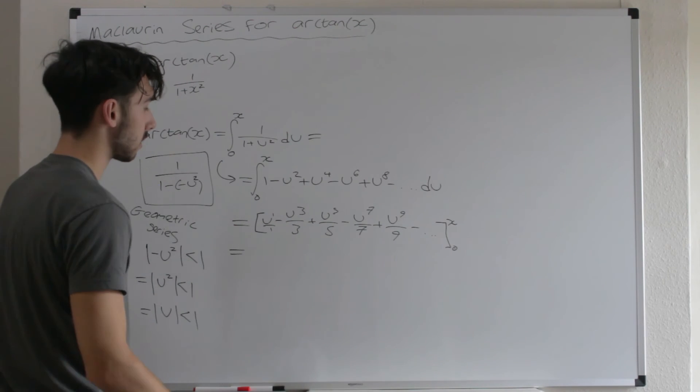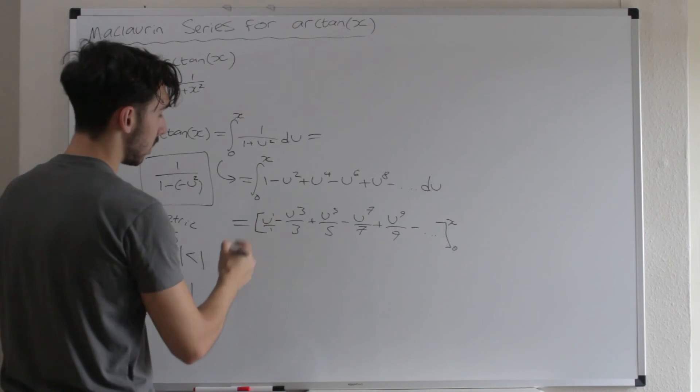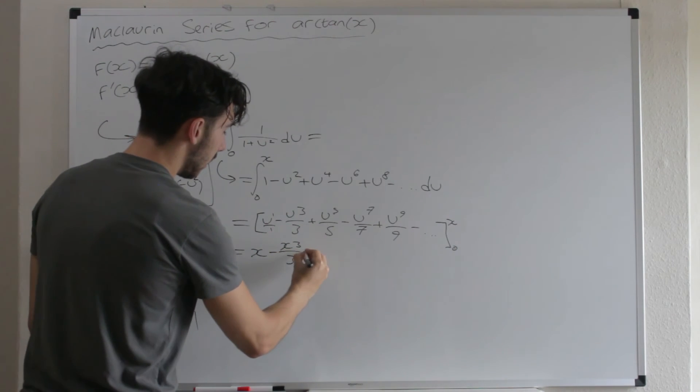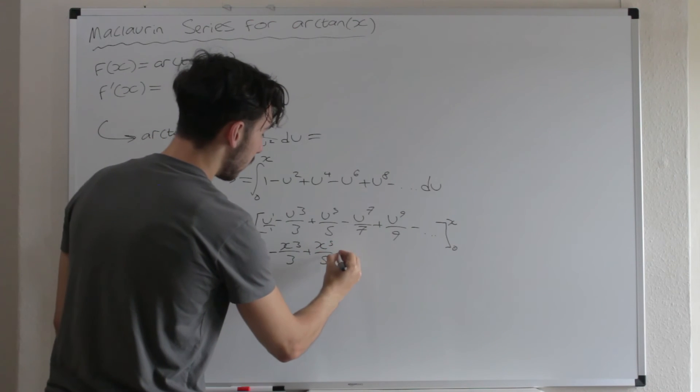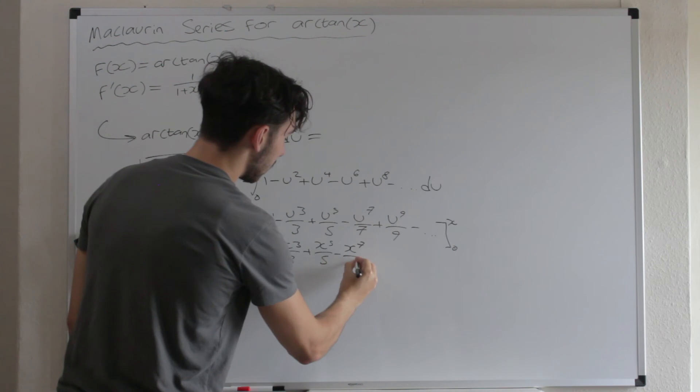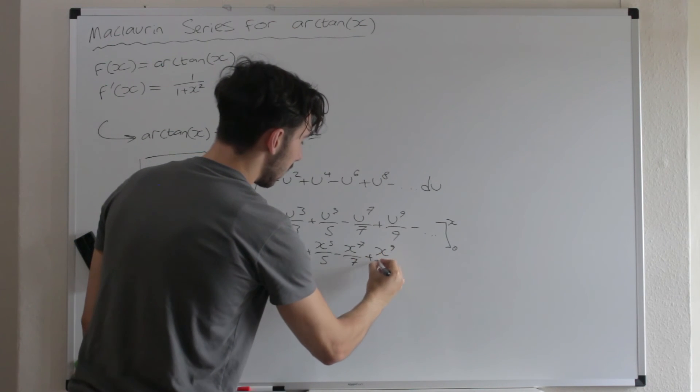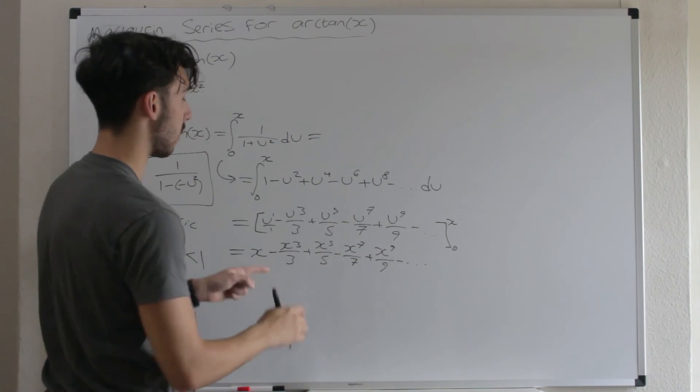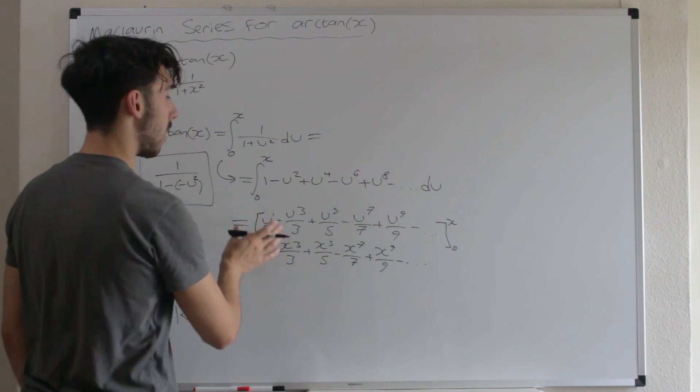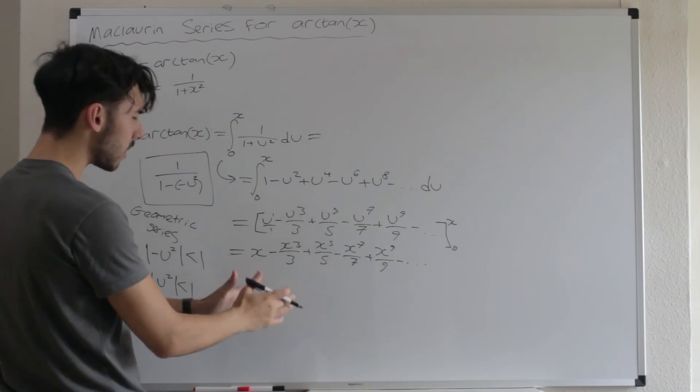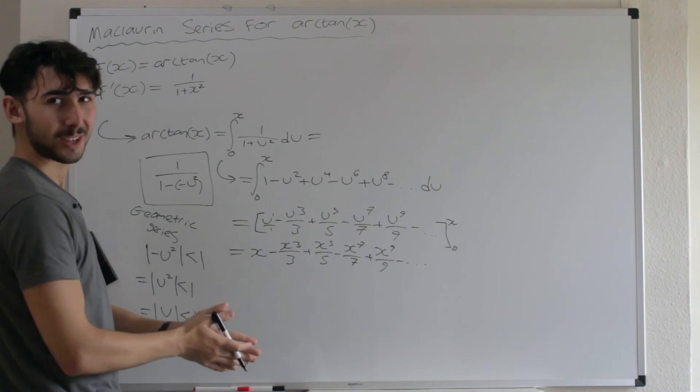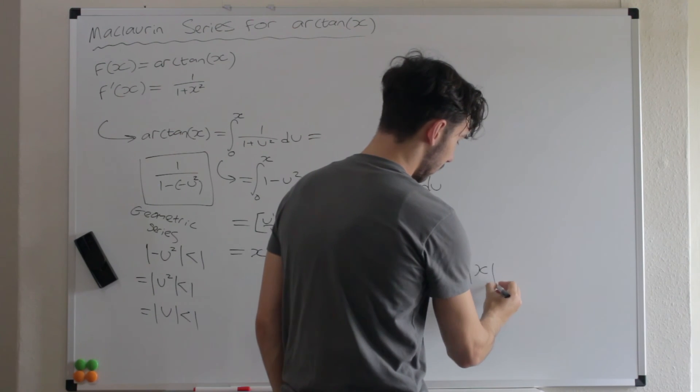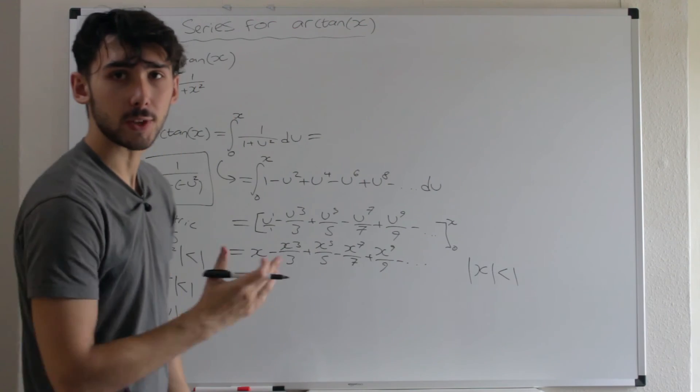And then we just replace everything with an x. So U to the 1 over 1 is just x, isn't it? And then minus x cubed over 3 plus x to the 5 over 5 minus x to the 7 over 7 plus x to the 9 over 9, etc. Forever. Done. Because when you substitute 0 in, guys, to this, you just get 0, don't you? Because every term has a U in it, so it's just 0. So this is our Maclaurin series for arctan x. We're basically done. As long as the modulus of x is less than 1, then this will converge.